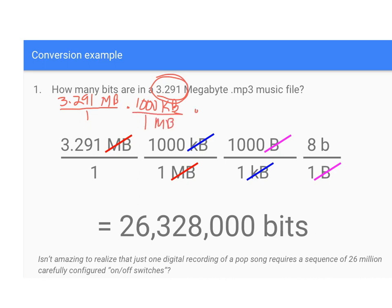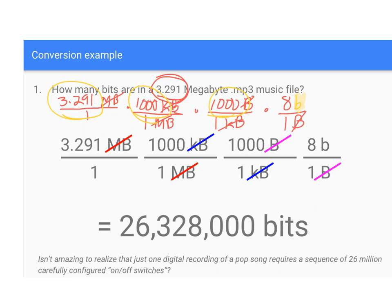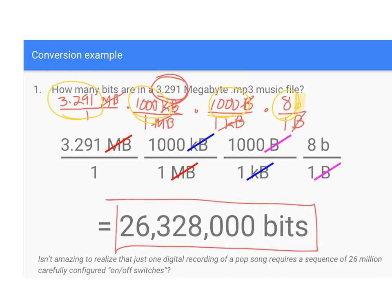Then you simplify the fractions: megabytes over megabytes cancel, kilobytes over kilobytes cancel, bytes over bytes cancel — and your only remaining units are bits. So you go to your calculator and do 3.291 × 1000 × 1000 × 8, and you get 26,328,000 bits.